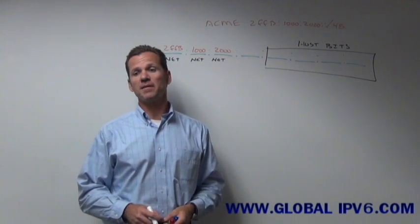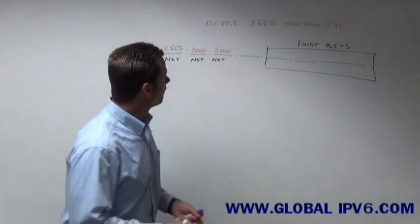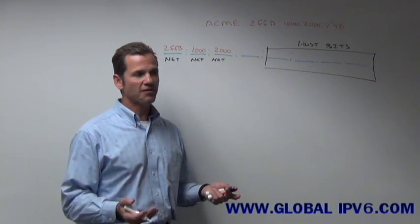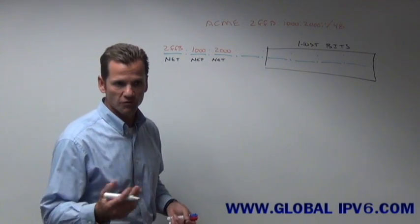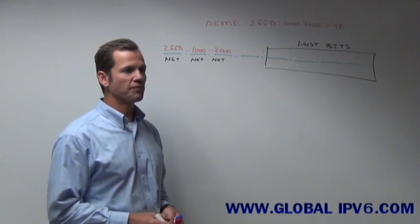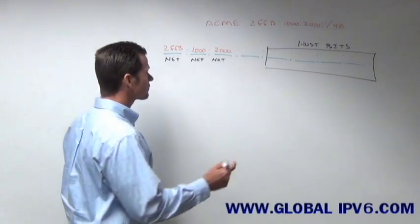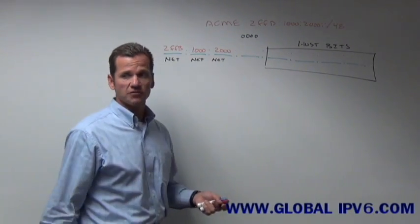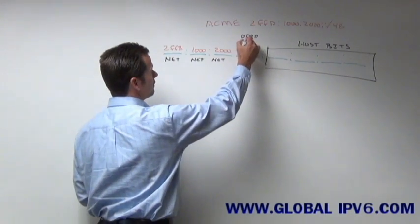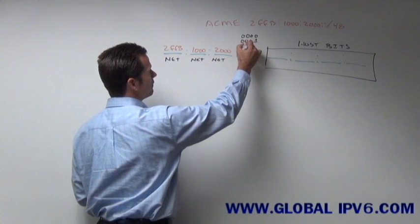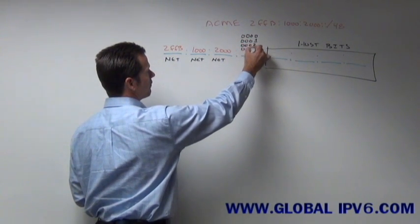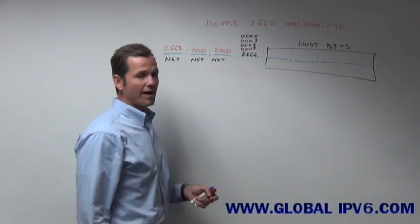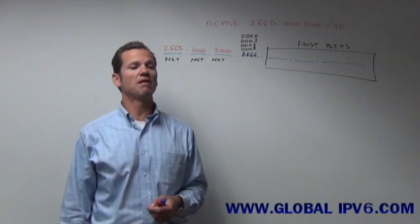So what are some possible subnets you could assign? Well, you actually have a wide range, because one thing about IPv6 is everything is written in hexadecimal. It's really no longer binary, we're using base 16 hex. My first subnet could actually be all zeroes. My next subnet could be 1, 2, 3, all the way to FFFF.